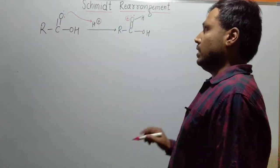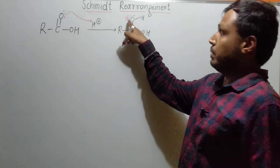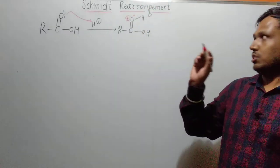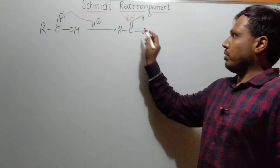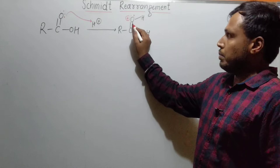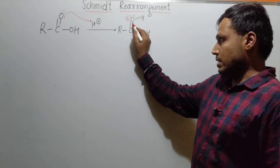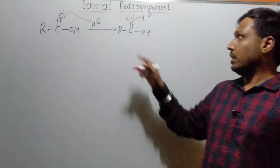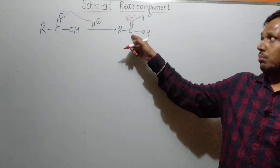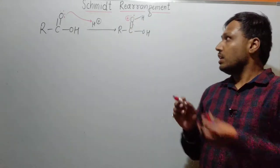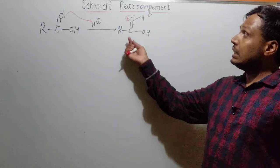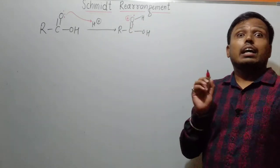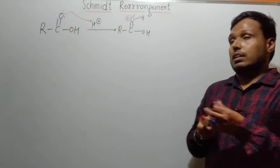After donating the lone pair, a positive charge develops on the oxygen. So this oxygen, having positive charge, will attract the electron from the carbonyl carbon towards itself. Hence this carbon will now become an electrophilic center.